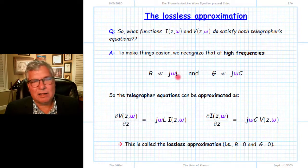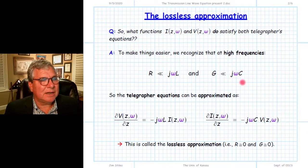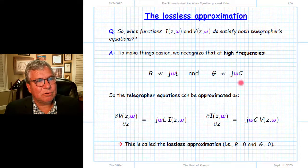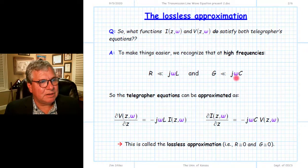The same thing applies to conductance and jωC: the magnitude of jωC is going to be much larger than G, and the reason for that is not C but omega. So we go back and look at our telegrapher equations.